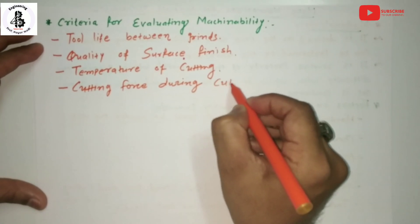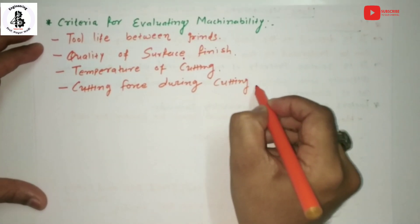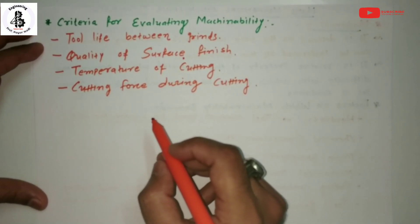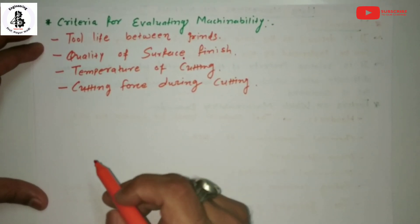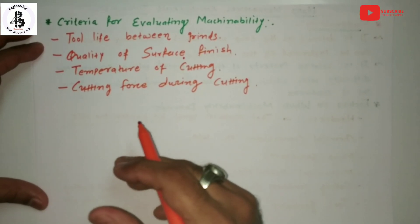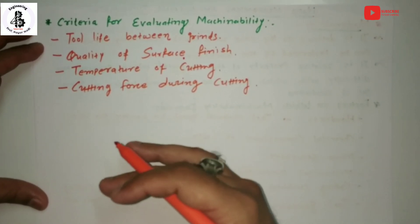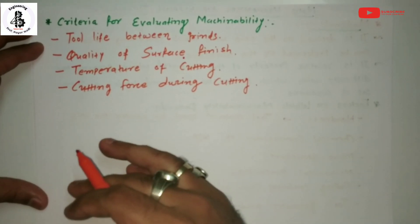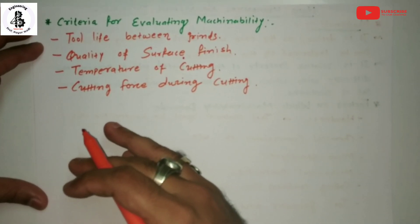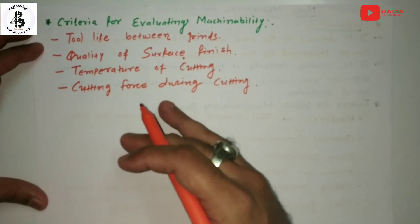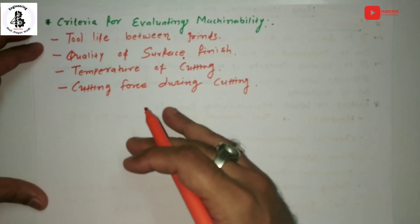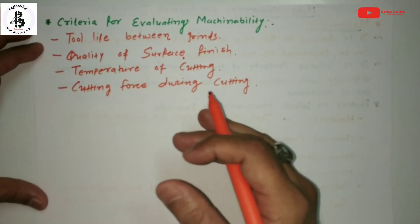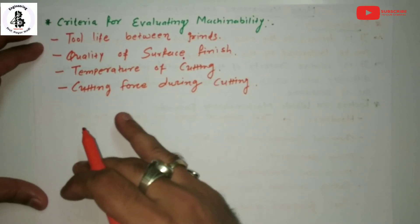Cutting force during cutting operations is another criterion. For cutting any kind of material — brittle or ductile — cutting force is a basic requirement. The amount of cutting force required for a good surface finish or better cutting operation is used as a term to help evaluate the machinability of jobs.